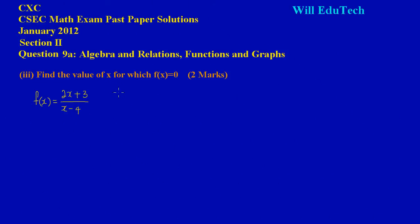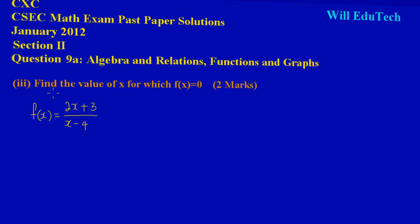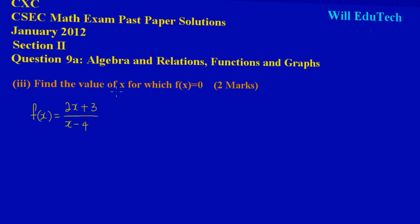Hey guys, in this video we'll be looking at the solution to question 9a part 3 on the CSEC math exam past paper January 2012. Basically what they are asking us here in part 3, we are supposed to find the value of x for which f of x is equal to 0. That's another two marks.